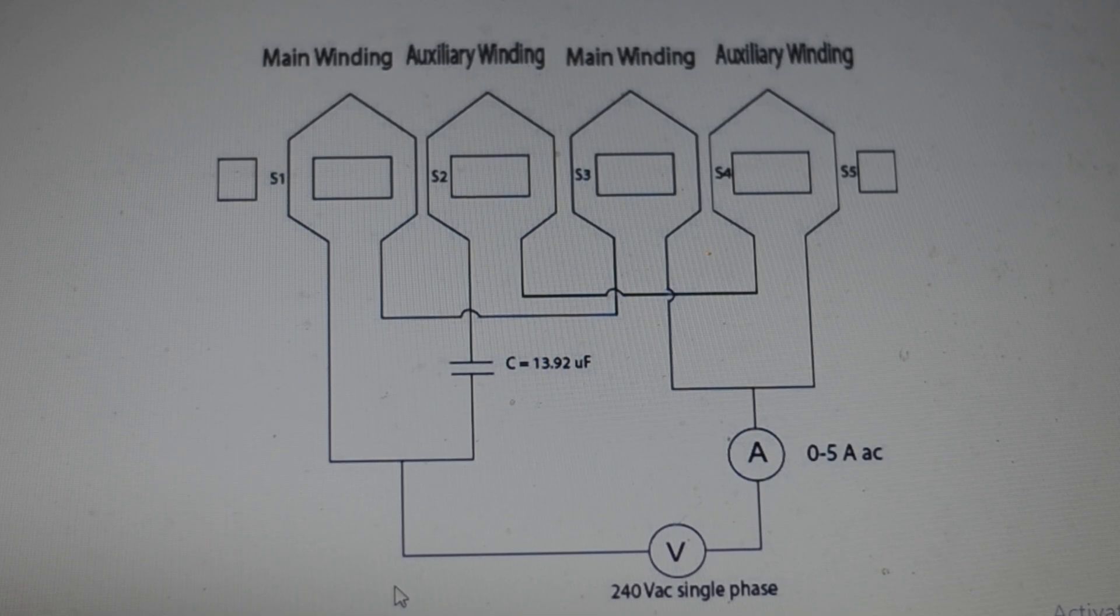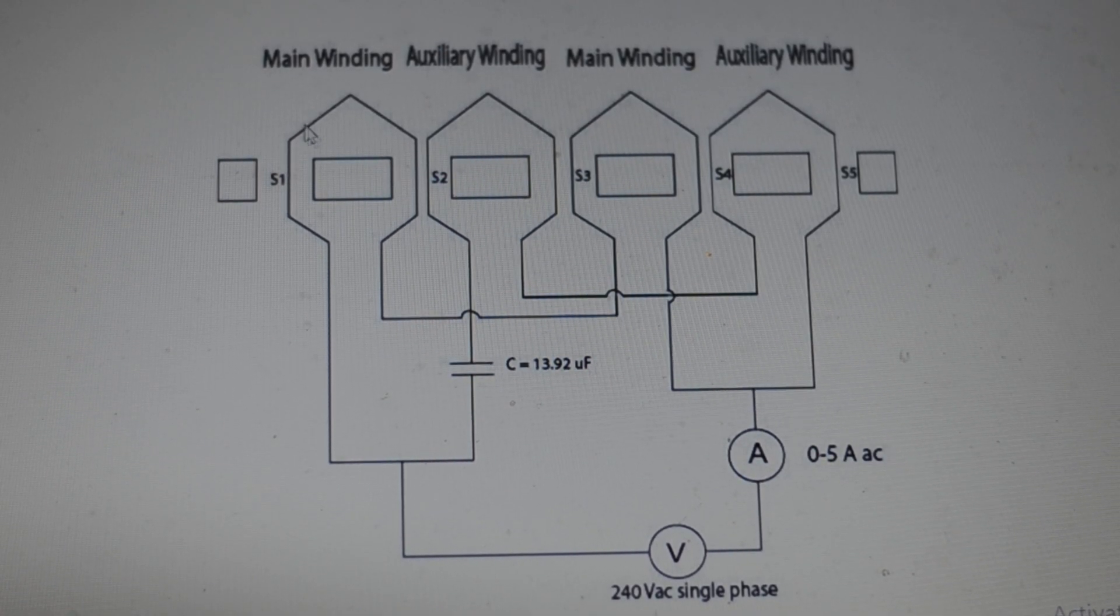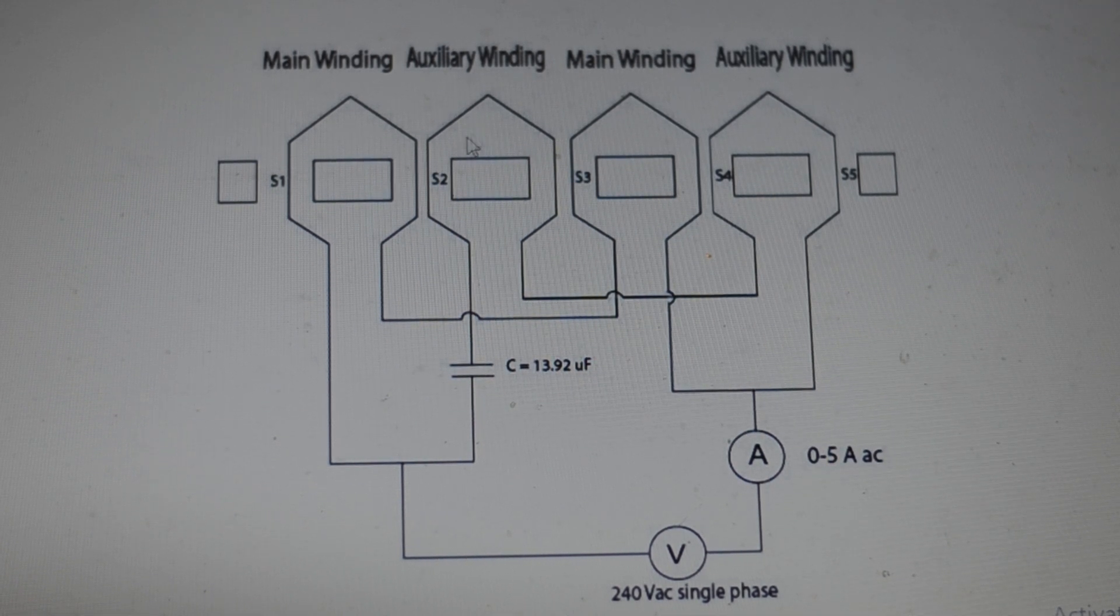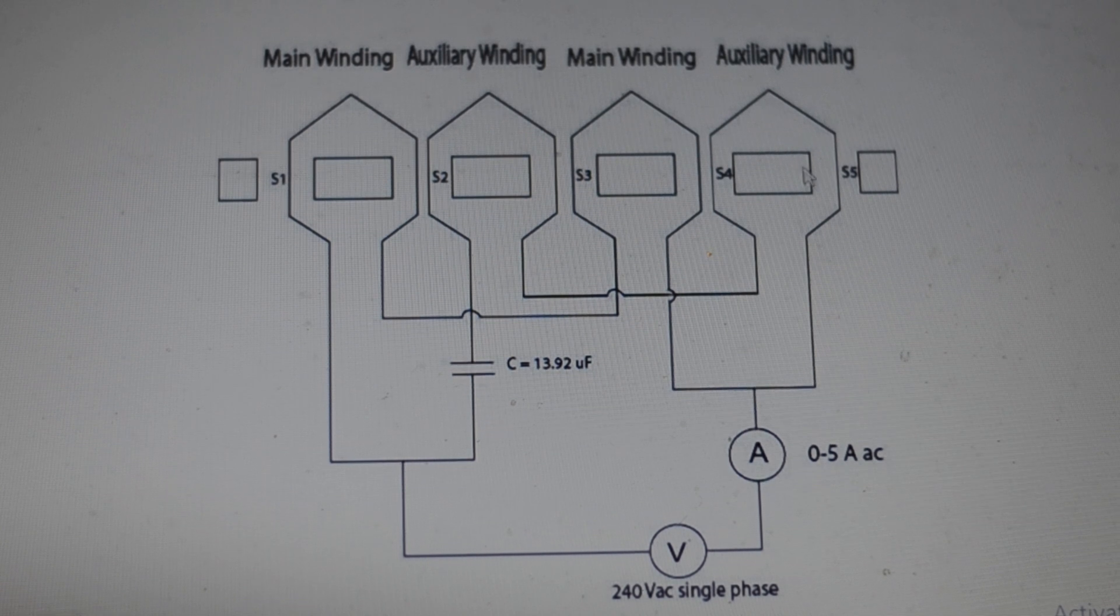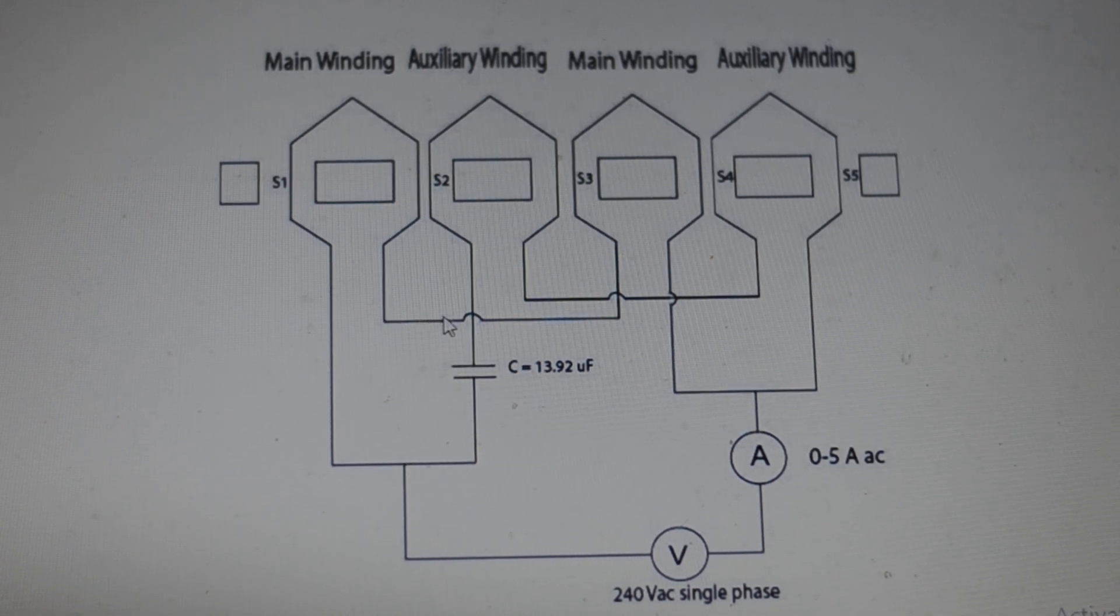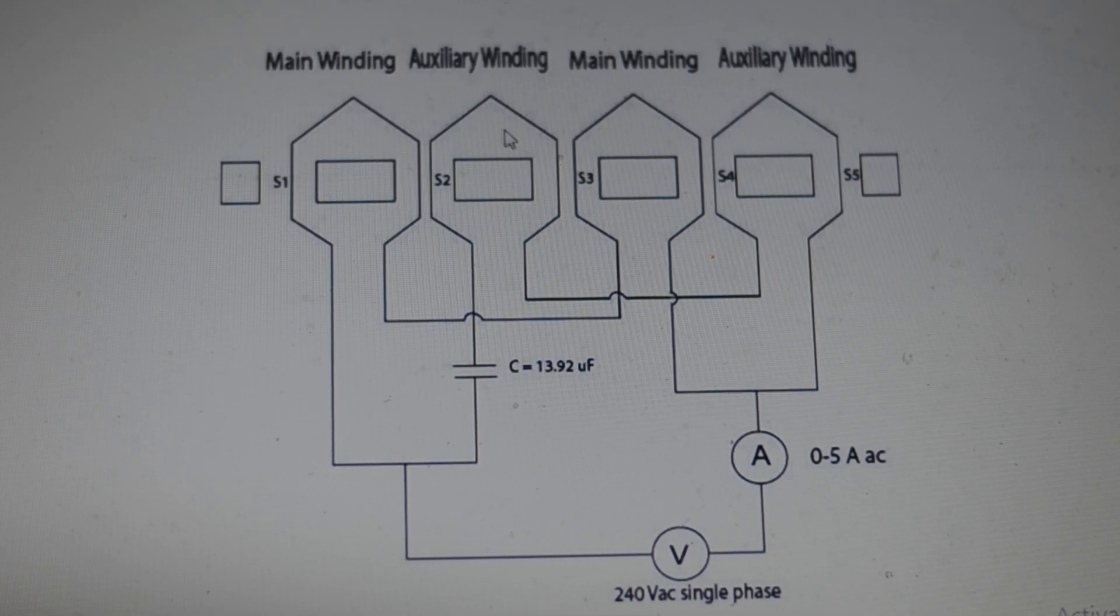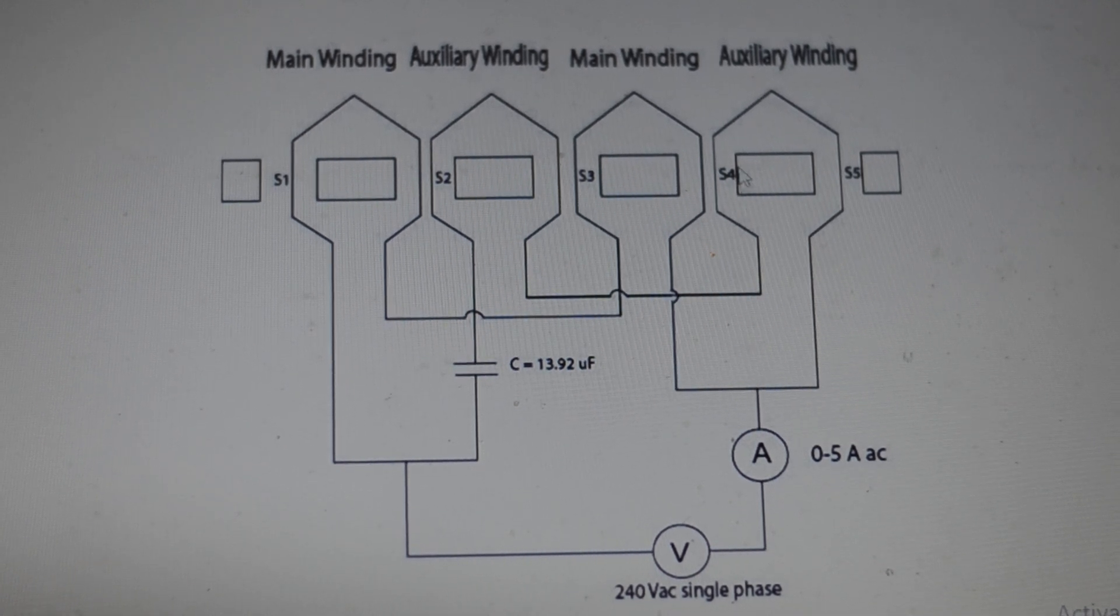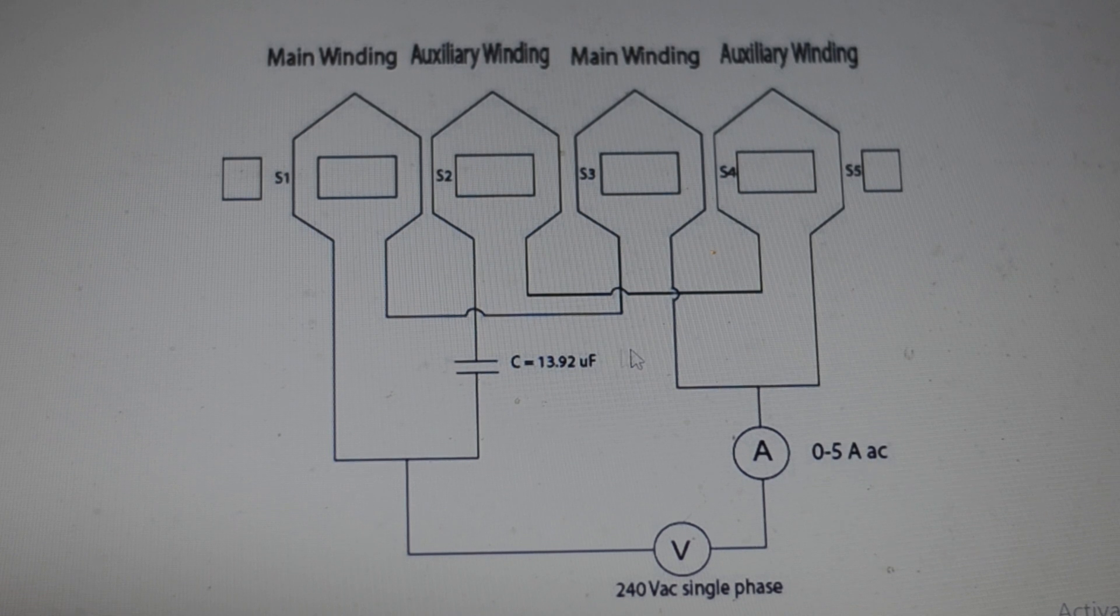This is the winding diagram of the motor. Here we have our four windings. First, we have a main winding, then an auxiliary winding, then another main winding, and then finally we have an auxiliary winding. So if you look at the diagram, you can see that the first main winding is connected in series with the second main winding, and the first auxiliary winding is connected in series with the second auxiliary winding. So we have four terminals coming out of the motor.